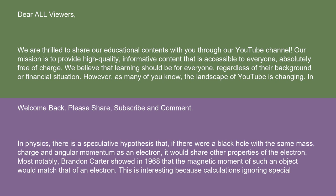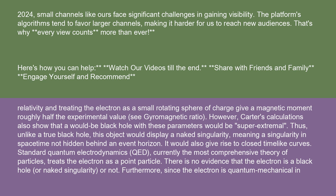This is interesting because calculations ignoring special relativity and treating the electron as a small rotating sphere of charge give a magnetic moment roughly half the experimental value (see gyromagnetic ratio). However, Carter's calculations also show that a would-be black hole with these parameters would be super-extremal.